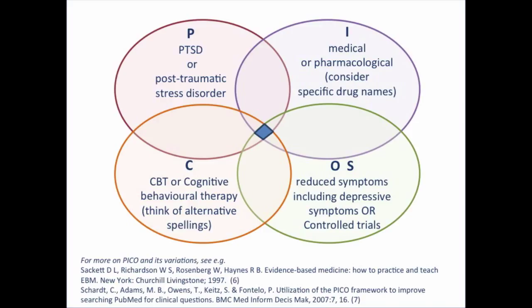The different circles and the way they overlap represent how I will be using the combining operator AND to achieve search results that contain at least one term from each circle. Related to that point is the reason I've combined my outcomes with study design for this question. I'd want to see all controlled trials about PTSD that compare CBT with medical interventions, regardless of whether the specific outcomes are described at title or abstract level. Bear in mind that although having this highly structured approach can lead to very targeted search results, it is also very restrictive, so you should be prepared to adapt your search if you think you're not getting representative results.